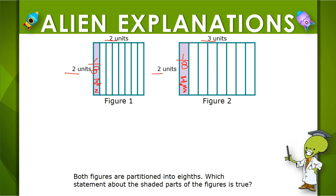So we know that the rectangle is wider than the square. So when we cut them into eight separate pieces, on this figure two, we started with a bigger figure. So as we cut into eighths, we can see that these pieces are going to be bigger than these pieces in figure one.